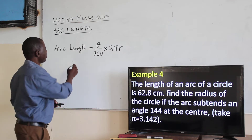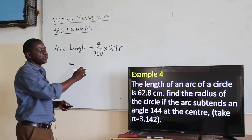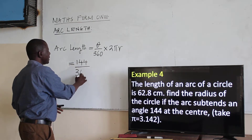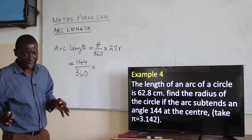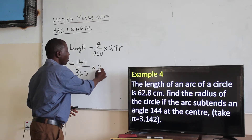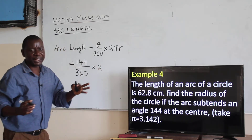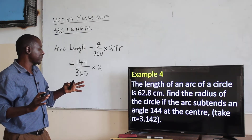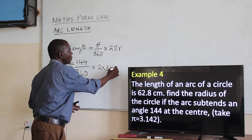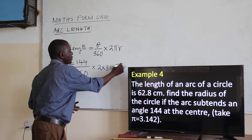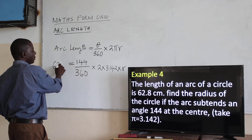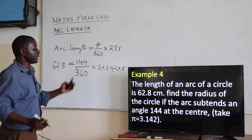We can substitute from there. The angle is 144 degrees. We divide by 360 simply to get the fraction of the circle made by that particular arc. Then we multiply by 2 pi R, where 2 times pi is 3.142, and R is what we don't know. The arc length itself is 62.8 centimeters, so we substitute that in.